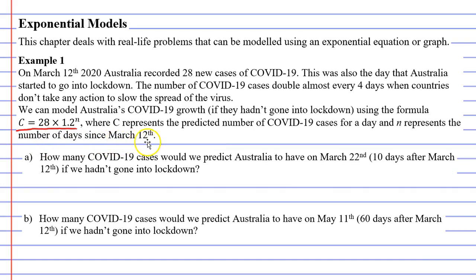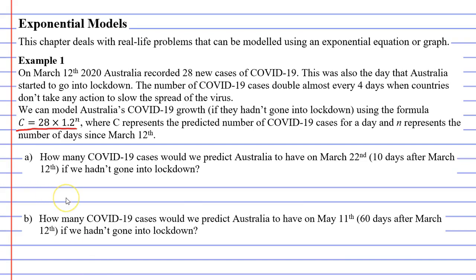Question A says: how many COVID-19 cases would we predict Australia to have on March 22nd? This is 10 days after March 12th, if we hadn't gone into lockdown. This formula is based on us not going into lockdown — it's to predict what would have happened. For question A, we'll start by copying the formula down: C equals 28 times 1.2 to the power of N.